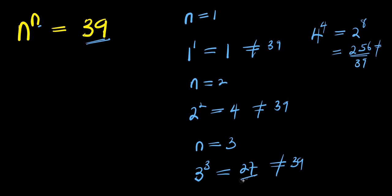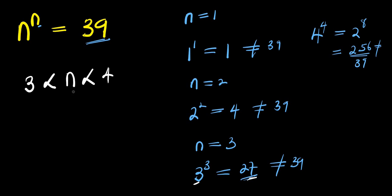And 27 is very close to 39. So from here, you can easily determine the range of values of n that will satisfy this equation. The range is: 3 to the power of 3, which is 27, is less than 39, meaning n is between 3 and 4, because 4 to the power of 4 equals 256, which is far greater than 39.